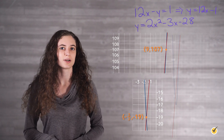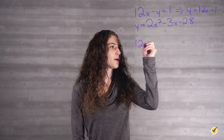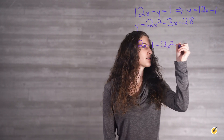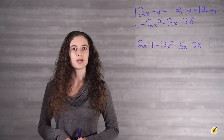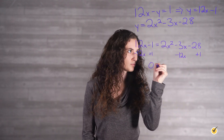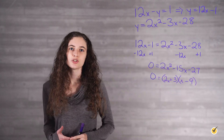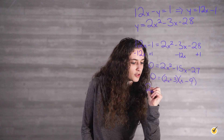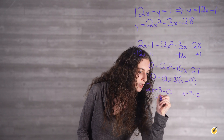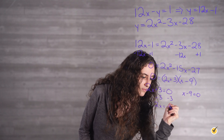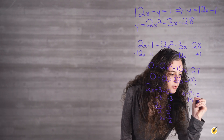Now let's check and see if we get the same answers using algebra. If we use our rearranged linear equation, we are able to set our two equations equal to each other and solve. 12x minus 1 is equal to 2x squared minus 3x minus 28. We can subtract 12x and add 1 to both sides to get all of our terms on one side and 0 on the other. Now we want to factor our equation to get our x values. If we set each factor individually to equal 0, we get 2x plus 3 equals 0 and x minus 9 equals 0. On the first equation, we subtract 3 from both sides and then divide by 2, so x equals negative 3 halves. On the second, we simply add 9 to both sides, giving x equals 9.